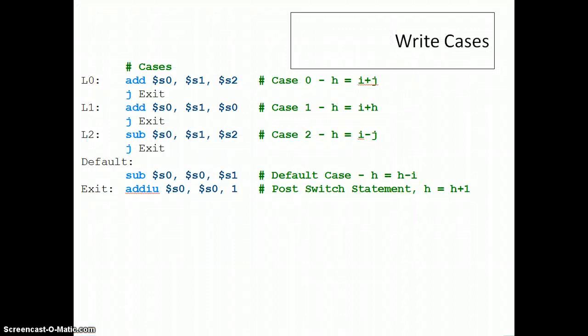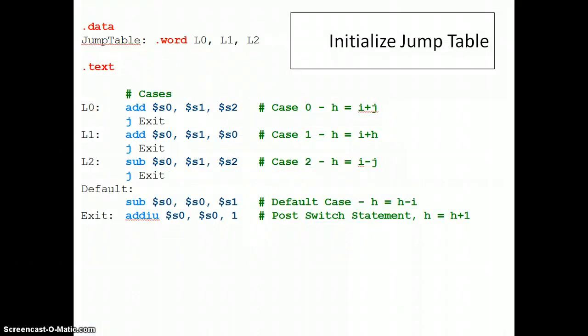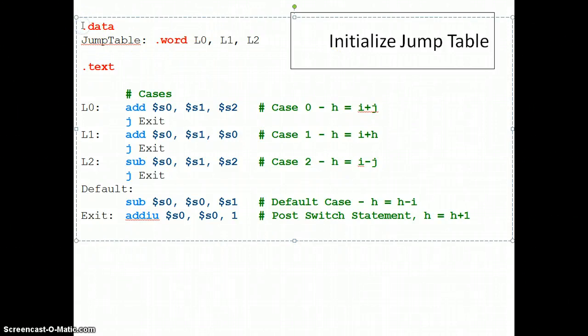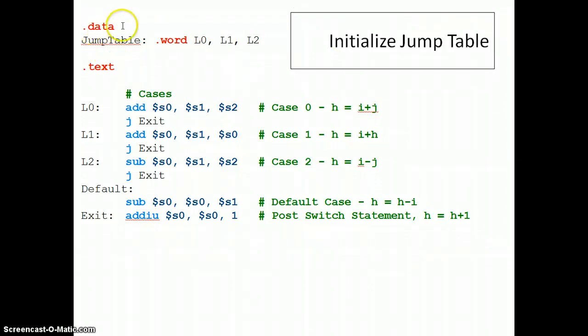Going back to the code, the next thing we want to do is initialize the jump table. The .data keyword says this is a section where I'm going to be declaring all of my variables. This is all the memory I want to reserve in RAM. So the jump table and every array that we ever store goes into RAM. That's what the data section is - this is data memory.